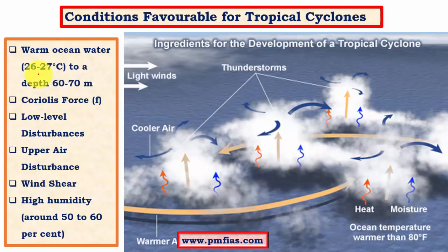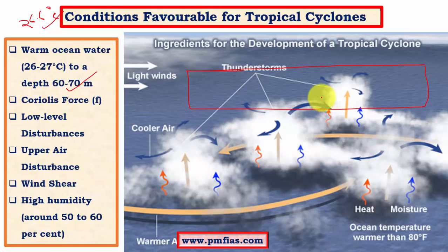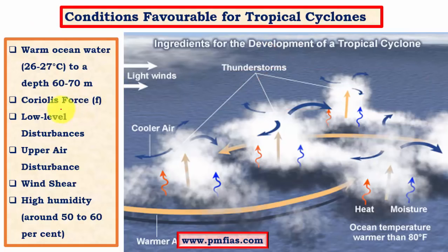For a tropical cyclone to form, the ocean surface must have a temperature of 26.6 degrees Celsius, and this warm layer should be about 60 to 70 meters thick. Another important factor is Coriolis force — without Coriolis force there is no closed circulation of air, and without closed circulation there is no tropical cyclone. Coriolis force is zero at the equator and maximum at the poles; from 5 degrees north/south to about 30 degrees north/south the Coriolis force is sufficient to create tropical cyclones.